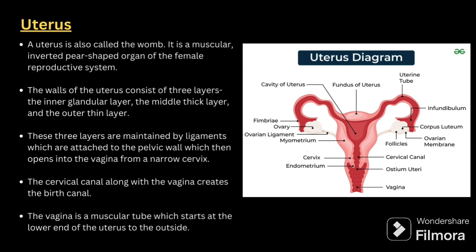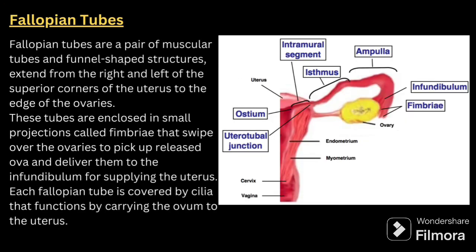The cervical canal along with the vagina forms the birth canal. Next comes the fallopian tube. Fallopian tubes are a pair of muscular, funnel-shaped structures extending from the right and left superior corners of the uterus to the edge of the ovaries. These tubes are enclosed in small projections called fimbriae that sweep over the ovaries to pick up and release the ova, delivering them into the infundibulum toward the uterus. Each fallopian tube is covered by cilia that carry the ovum to the uterus.